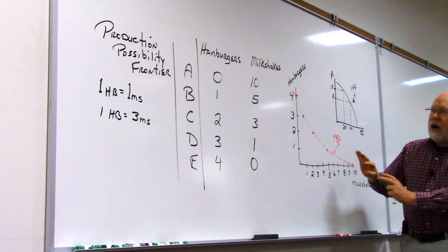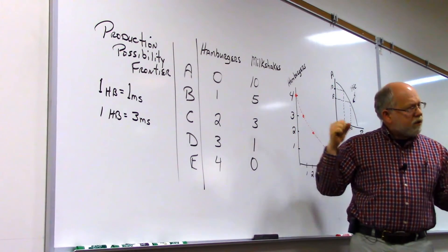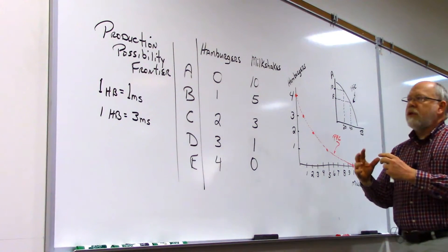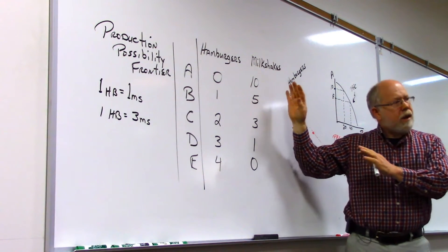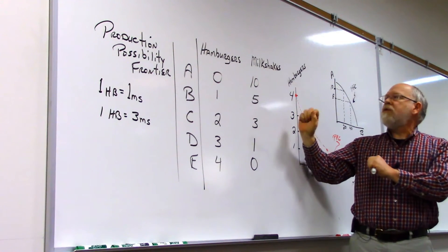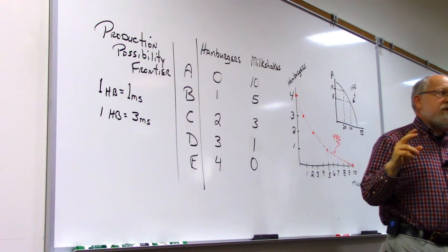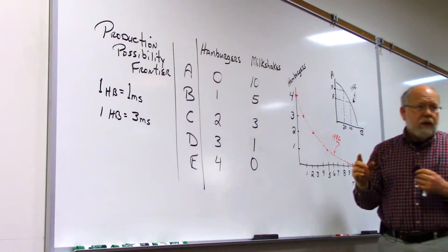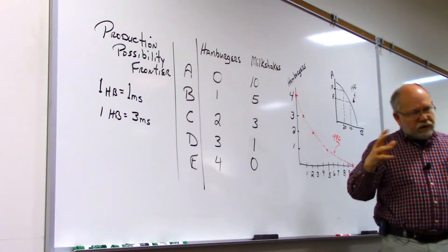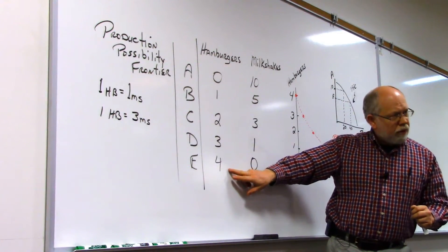So we could show a production possibility frontier here in a schedule like this in which we have points on a curve. And I've put the points over here as dots. So it's possible if we worked as hard as we possibly could to produce all milkshakes. But we've also got the capacity of making hamburgers. And so if we worked as hard as we possibly could, given our existing facility, we could produce up to four units of hamburgers.